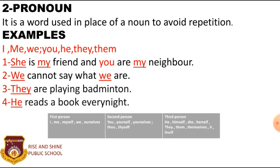Personal pronouns stand for three persons. First, the person speaking. Second, the person spoken to. Third, the person spoken of. The pronouns I and we, which denote the person or persons speaking, are said to be personal pronouns of the first person. The pronoun you, which denotes the person or persons spoken to, is a personal pronoun of the second person. The pronouns he, she and they, which denote the person or persons spoken of, are said to be personal pronouns of the third person.